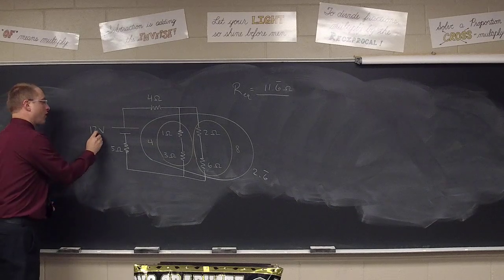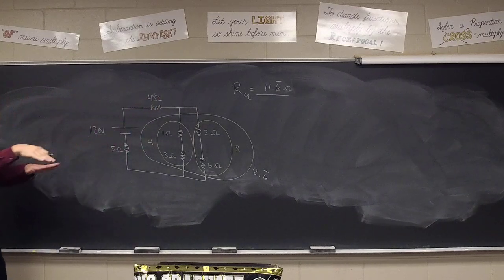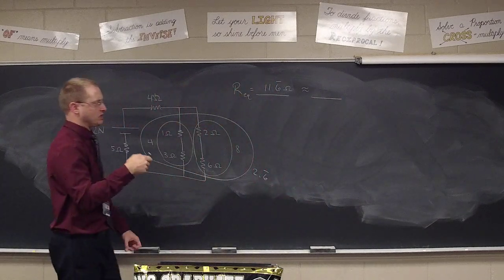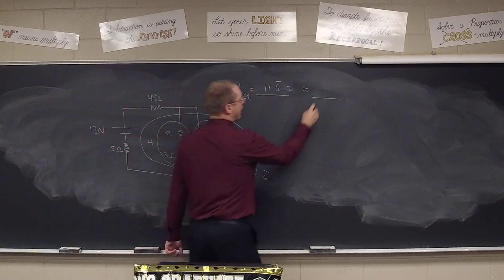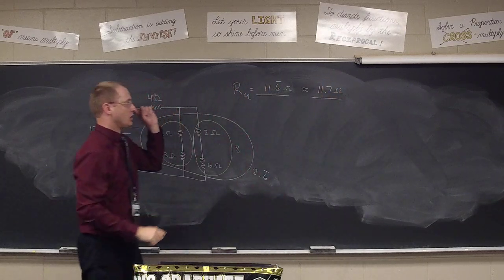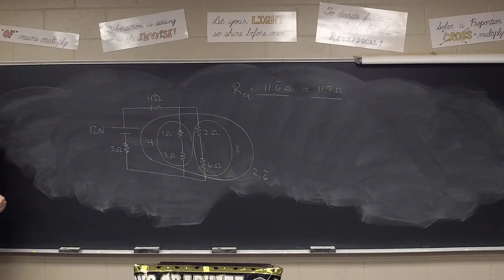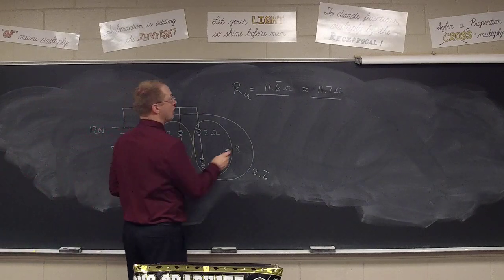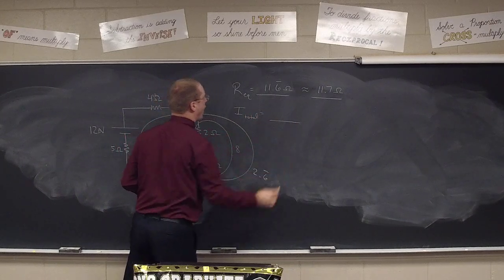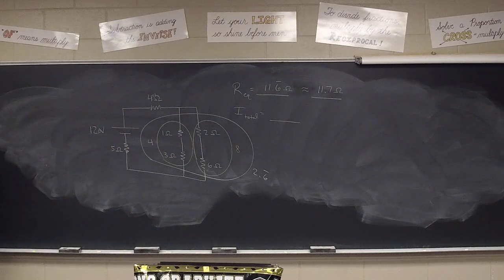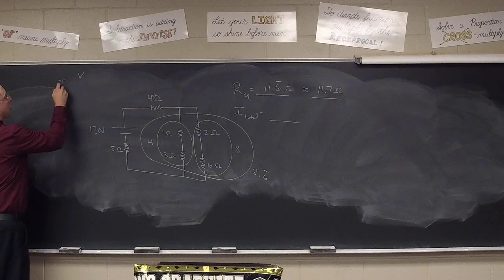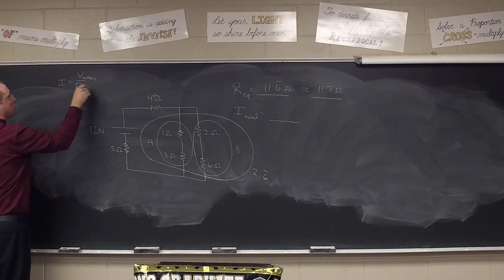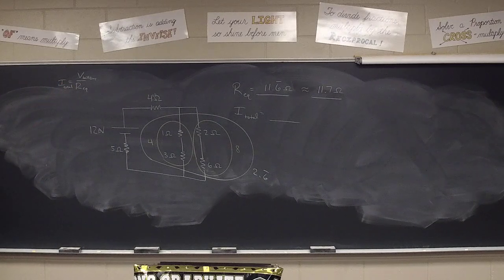Now, if this had been 12.0 volts and 4.00 ohms and all throughout, if I put three sig figs everywhere, we would round our answer. We wouldn't use the rounded answer, but I would round the answer for sake of quizzing and testing to 11.7 ohms. But in all my calculations, I'm going to base it off of 11.6 repeating. How many got the 11.7 or 11.6 repeating ohms? We're all good on the first step. The second thing we always find, the total current. How much current is in this thing all together? How do I find current? I equals V over R.